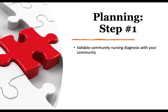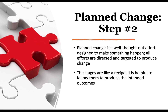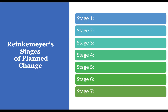On to chapter 13 — planning, step one: validate your community nursing diagnosis with your community. During this step, begin considering nursing interventions to promote the community's health by formulating a community-based plan. Each of the three parts of the diagnostic statement — description of the actual or potential problem, its causes, and direct planning efforts — provide equally important information for planning. Planned change is step two: a well thought-out effort designed to make something happen. All efforts are directed and targeted to produce change. The stages are like a recipe — helpful to follow in order to produce the intended outcome.